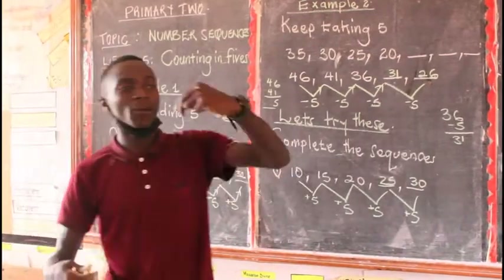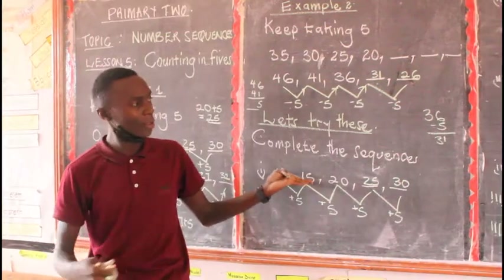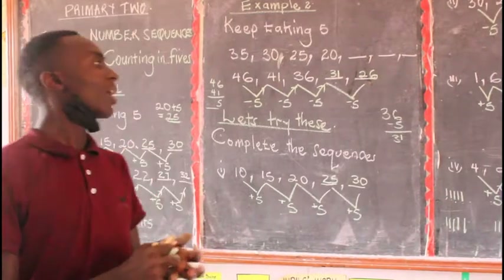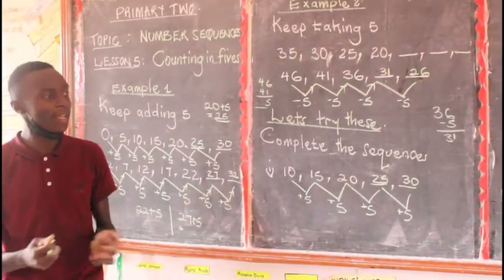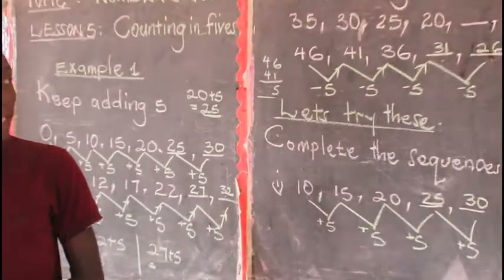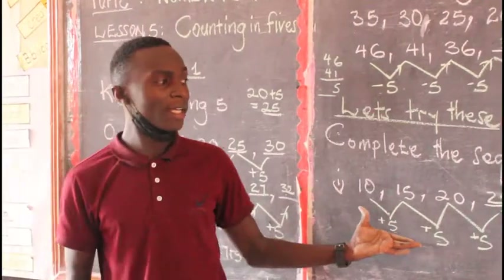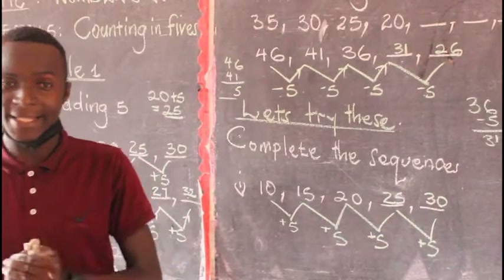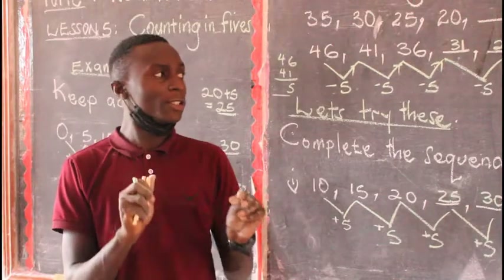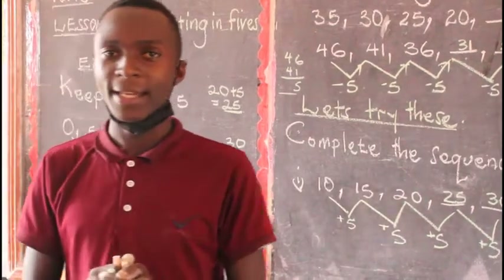That is how we do number sequences, counting in 5s — we reduce and we also add. Thank you very much, my dear children of Primary 2. Thank you for paying attention to this lesson. An activity is going to be sent to you — please do it properly. Remember, in mathematics we write properly and organize our work. We don't scribble. Thank you. We'll meet in the next lesson.